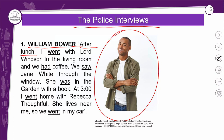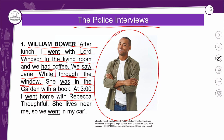William diz: 'After lunch, I went with Lord Windsor to the living room and we had coffee.' Depois do almoço, eu fui com o Senhor Windsor até a sala de estar e tomamos café. 'We saw Jane White through the window' — nós vimos a Jane White através da janela. 'She was in the garden with a book.' 'At three, I went home with Rebecca Thoughtful — she lives near me. So we went in my car.'